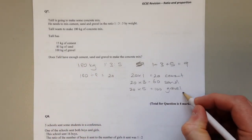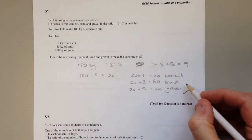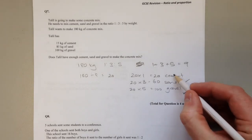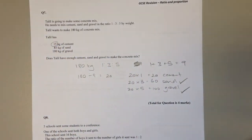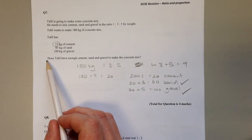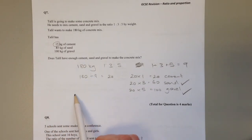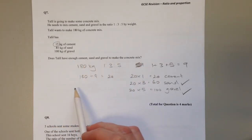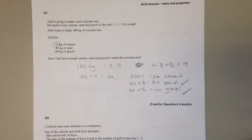Now what you have to do to finish the question is compare what we need against what we have. You can see we've got enough gravel just. We've got enough sand because we have 85 kilograms and we need 60. But we need 20 kilograms of cement and we've only got 15 kilograms. So to complete the question and get full marks, you have to answer: Does Talal have enough? No. He's 5 kilograms short of cement.